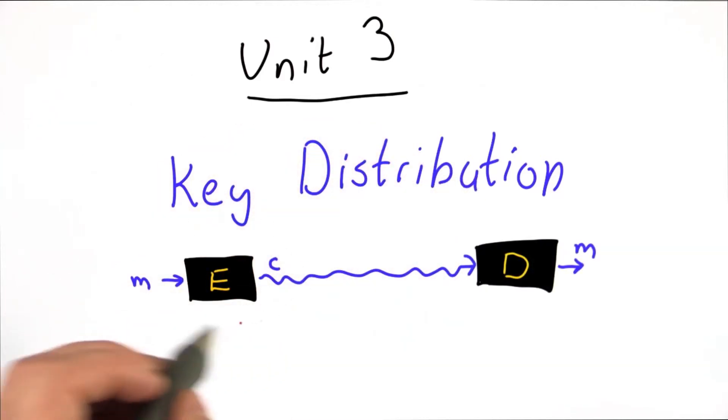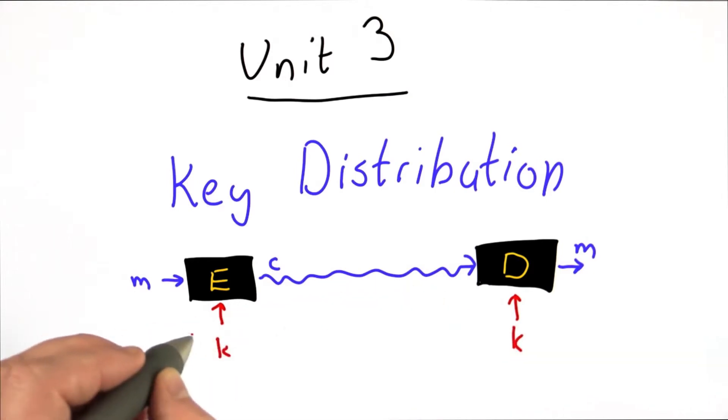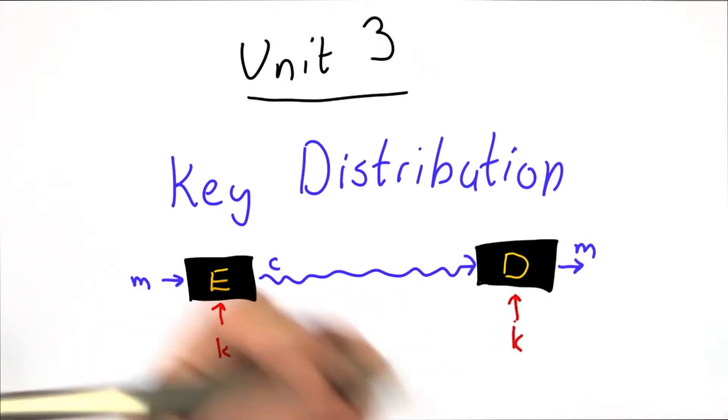Welcome to Unit 3. In Units 1 and 2, we learned about symmetric ciphers and how to use them. Symmetric ciphers assume that both parties have the same key. The important property that makes them symmetric is that the same key is used for encrypting and decrypting.